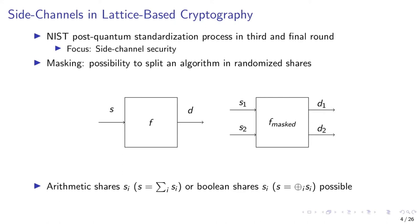The most common countermeasure against side-channel attacks is called masking. This is the possibility to split an algorithm into n randomized shares, preventing an attacker from gaining important information about the secret data from n-1 shares. In lattice-based cryptography, Boolean and arithmetic operations are used, and therefore arithmetic masking or Boolean masking is needed.